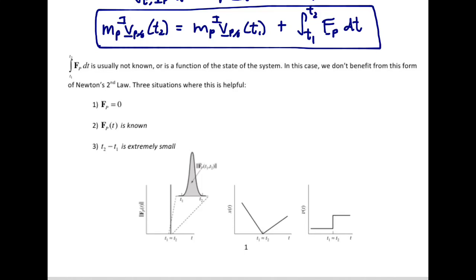However, there are three situations where this impulse-momentum format is very helpful. These alternative forms of F equals ma have their situations, and it becomes a matter of recognizing when it's appropriate to apply them. The first situation is when the force we're integrating is equal to zero — that's conservation of linear momentum. This is representative of Newton's first law, which says that when an object is in motion, it's not going to change its speed or path unless acted on by an outside force.